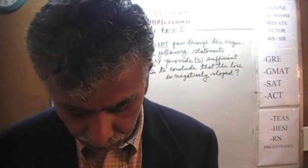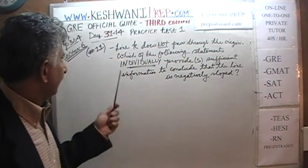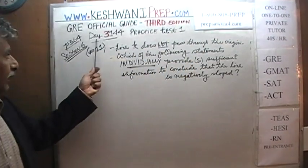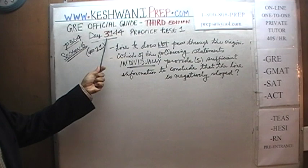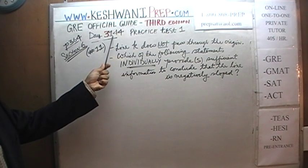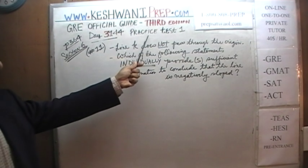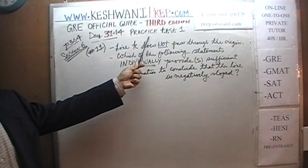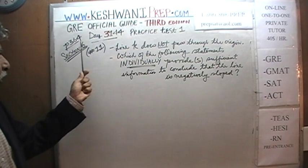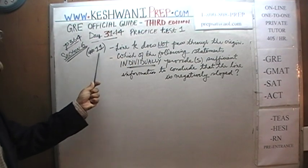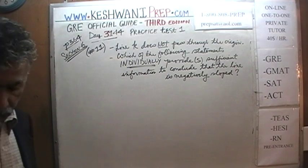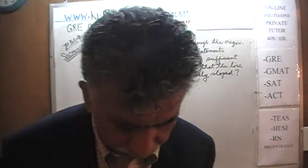Today is our lesson number 144, day 3144 — the 3 is to signify the fact that we are in the 3rd edition, day 144. We are working on the practice test that you will find at the end of the book on page 364, section 6, and we are about to do problem number 11.